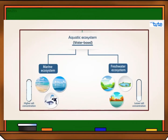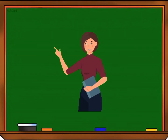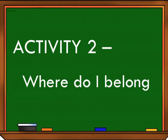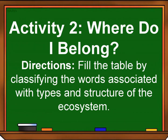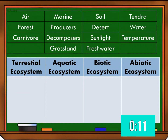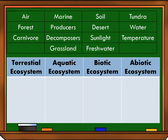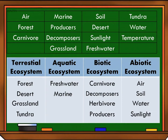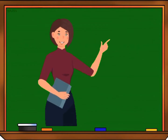In the next session we'll discuss the structure of the ecosystem. Did you understand the video? If so, you are now ready to answer Activity 2: Where Do I Belong. Fill the table by classifying the words associated with types and structure of the ecosystem. We will now fill up the table with the correct answers and check if your answers are correct.